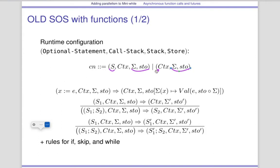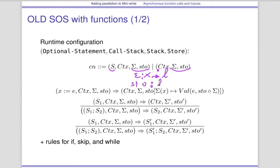In sigma you have bindings of the form variables to memory locations. And in the store, you map memory locations to values. So by accessing sigma then store you would go from a variable to a value. That's the idea of decoupling: sigma will change depending on the context and on the function in which we are, while the store represents memory and it won't change — it will be affected by assignment but not by changing of context.